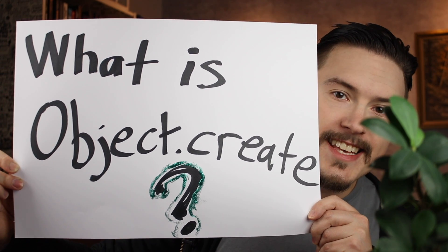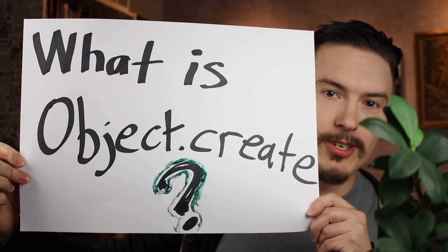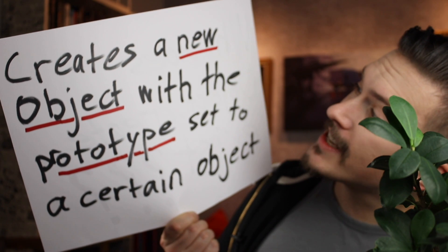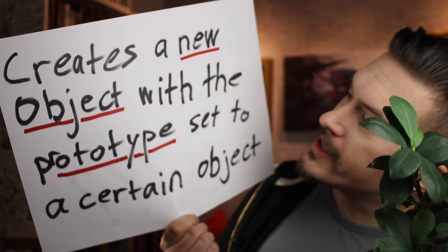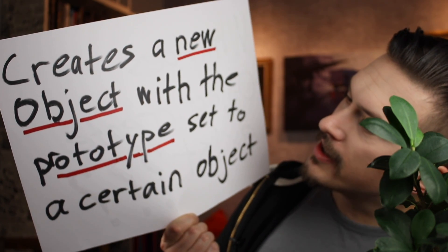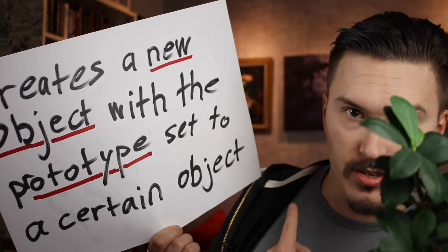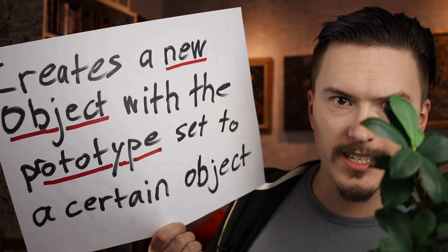First of all, what is Object.create? Object.create is a static method on the object prototype that creates a new object with the prototype set to a certain object.